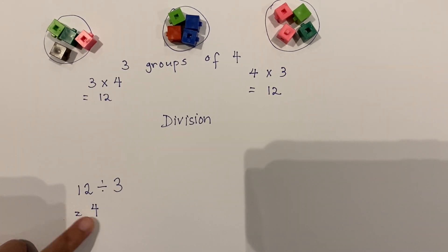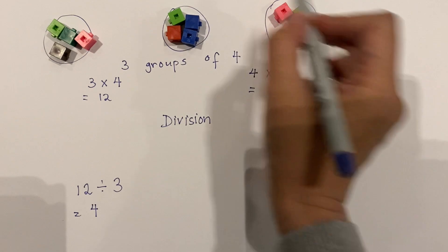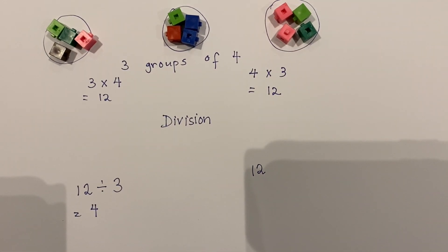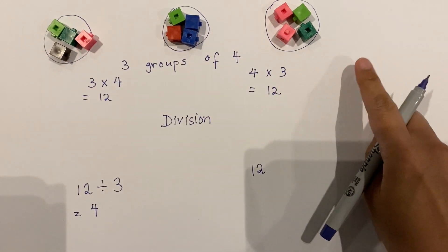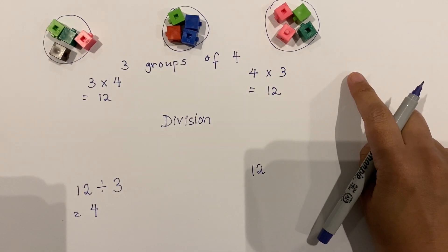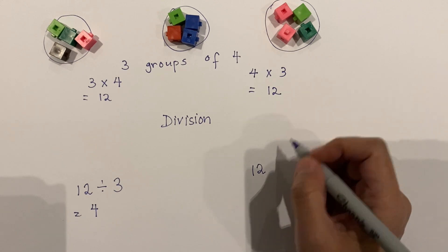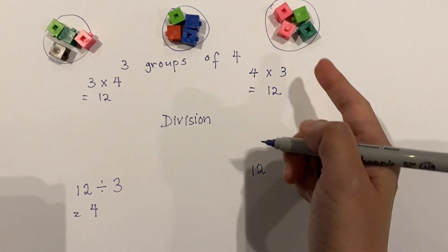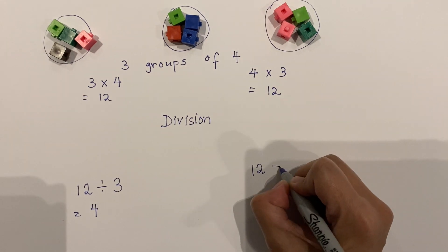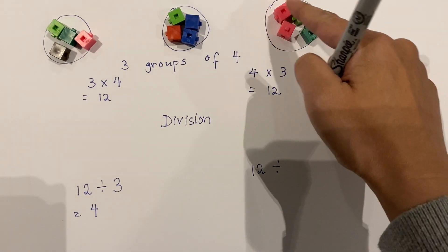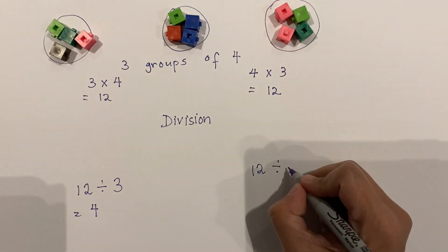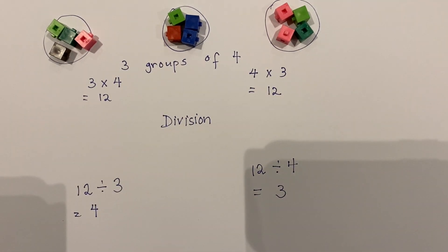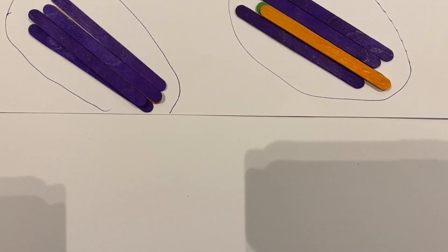Another way of writing a division fact — always start with the total, which is 12. I have a total of 12 cubes, and in each group there are 4 cubes. How many groups are there? So 12 divided by 4, and my answer is 3 groups.